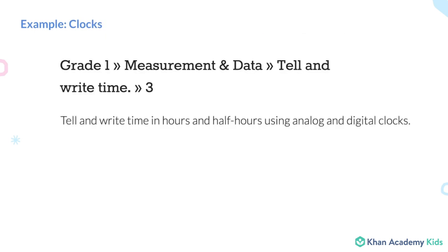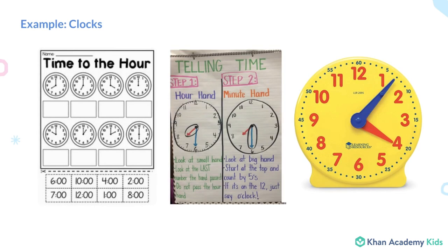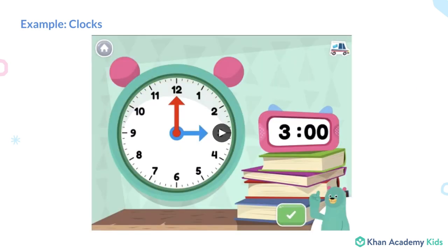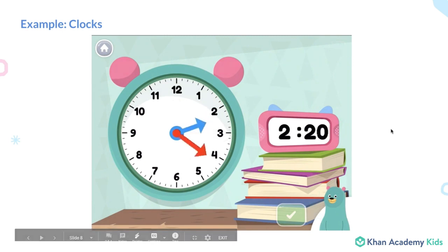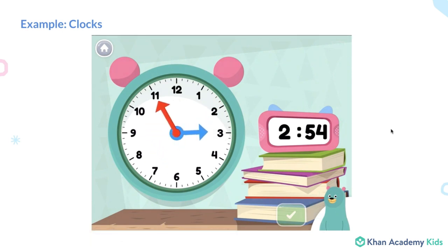We also cover standards around learning to tell time. There are various tools for kids to learn how to tell time. They learn about the hour hand and the minute hand, and that you have to count by fives to count the minutes. It's often hard to connect the relationship between the analog and digital clock. With our clock activity in Khan Kids, our goal was to make this relationship clear. There's an open-ended exploratory mode where you can move the hands of the clock and see how the digital clock changes.